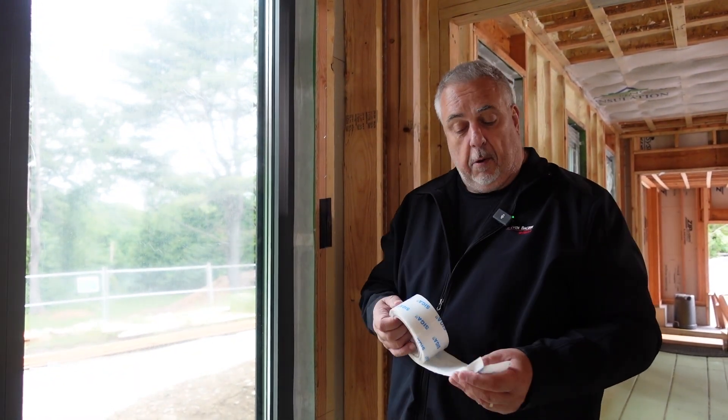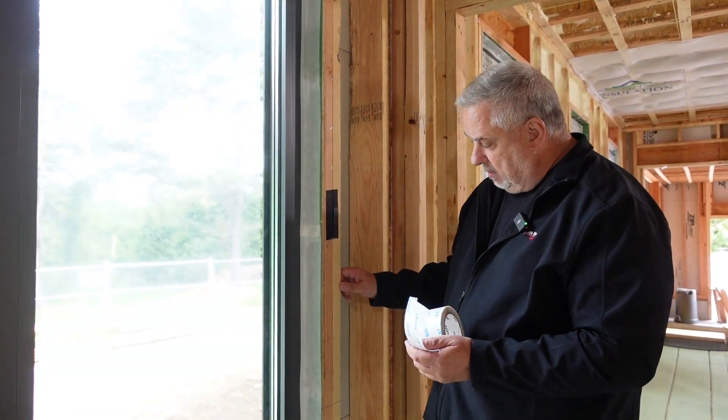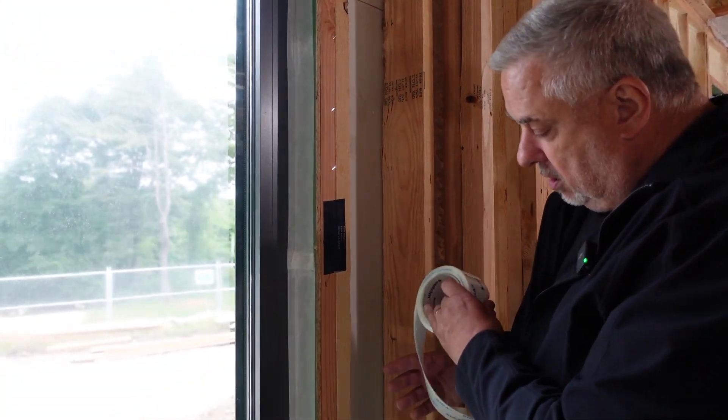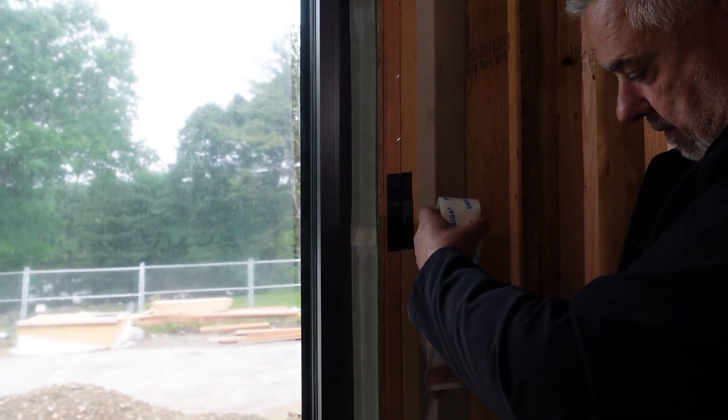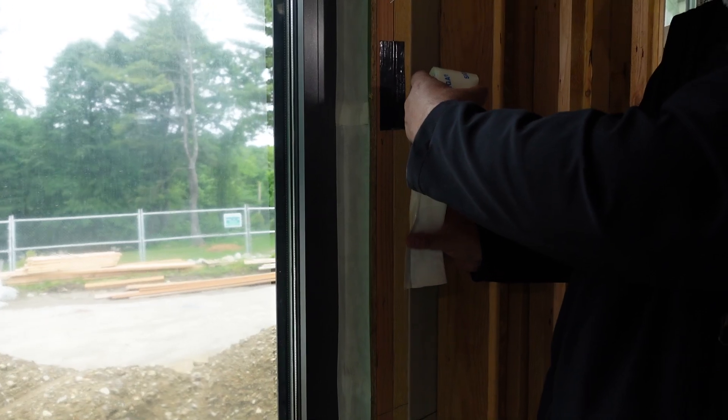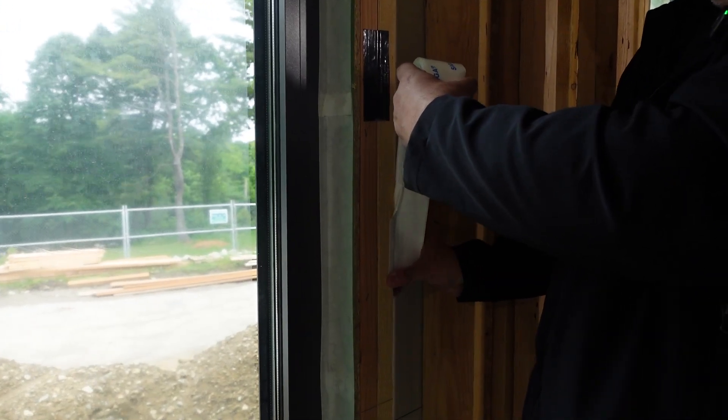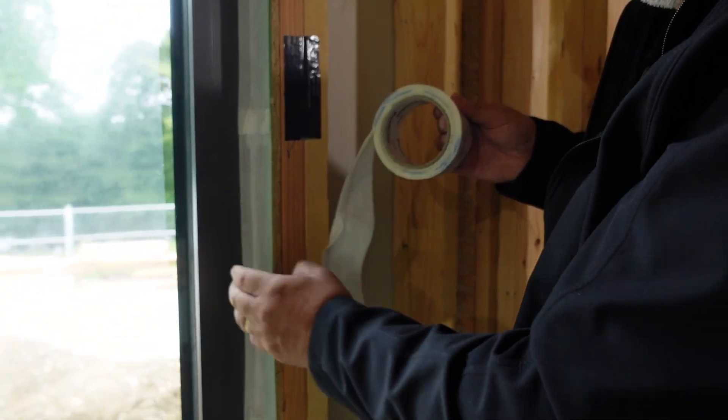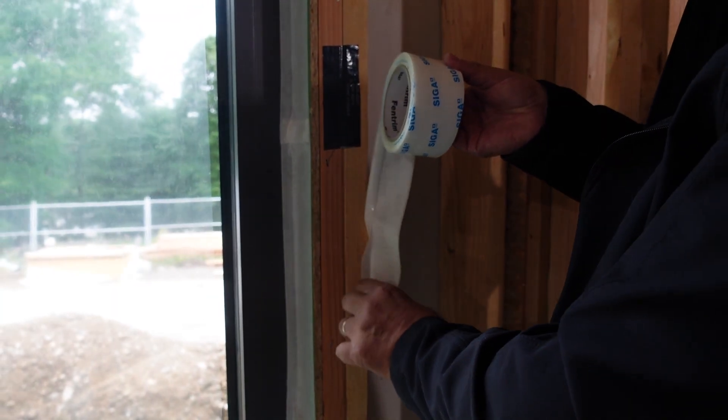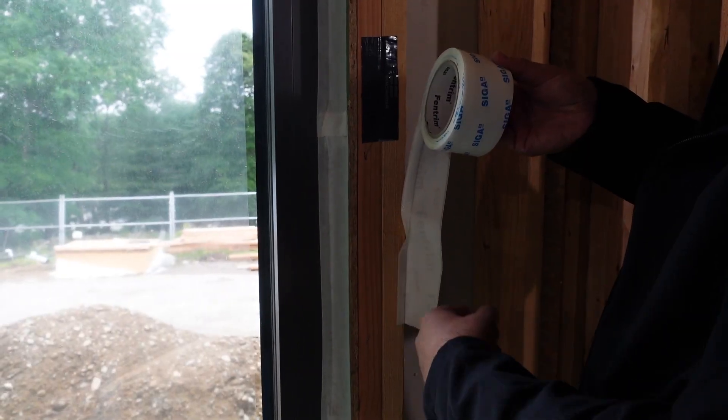The one we use on the outside is permeable, so that if any moisture gets into the system it has the ability to dry to the outside. Now that short flange, I'm just going to demonstrate it on the stud here, it is made to go where that flange, the short flange, would then get installed along the window.